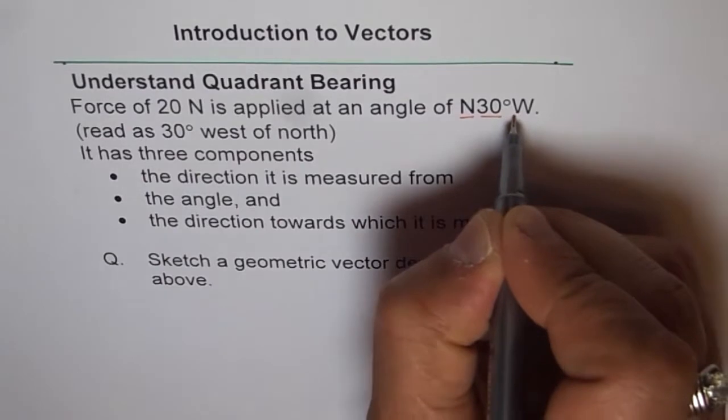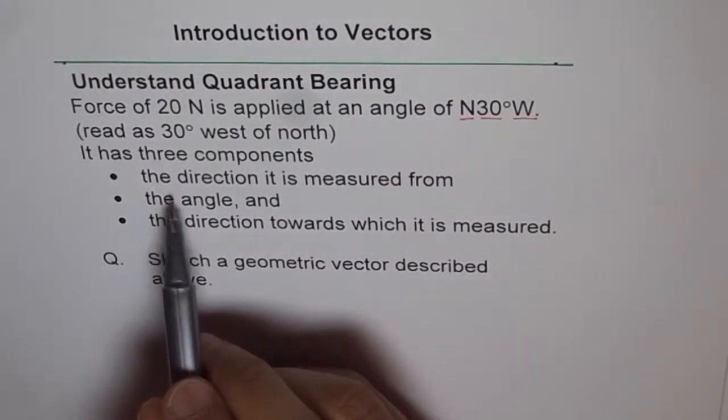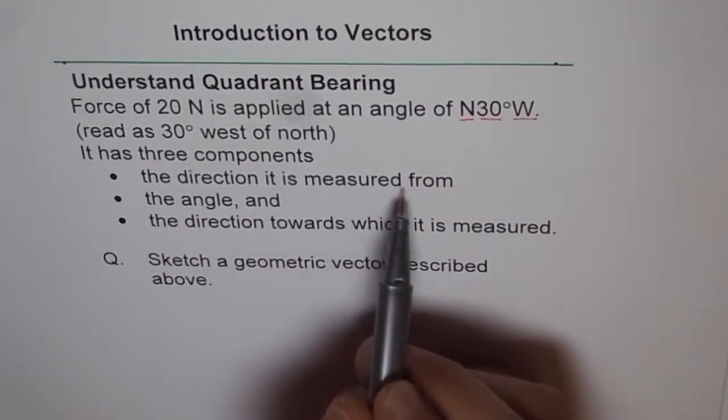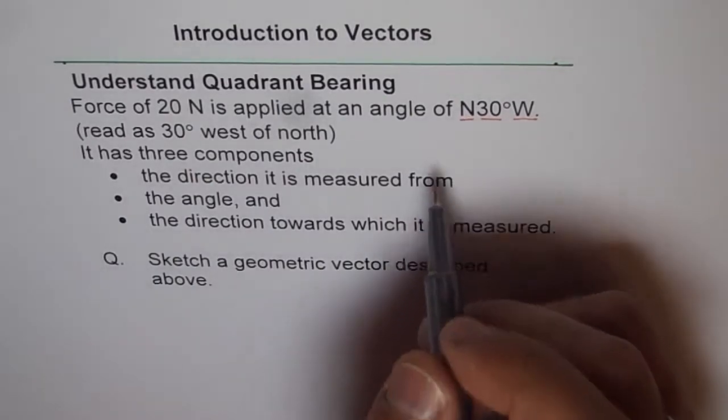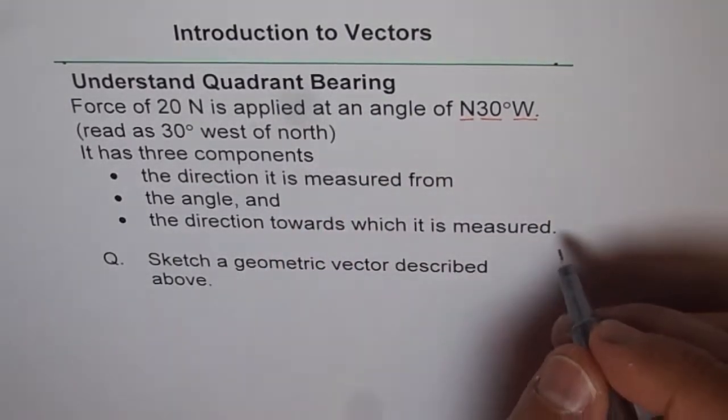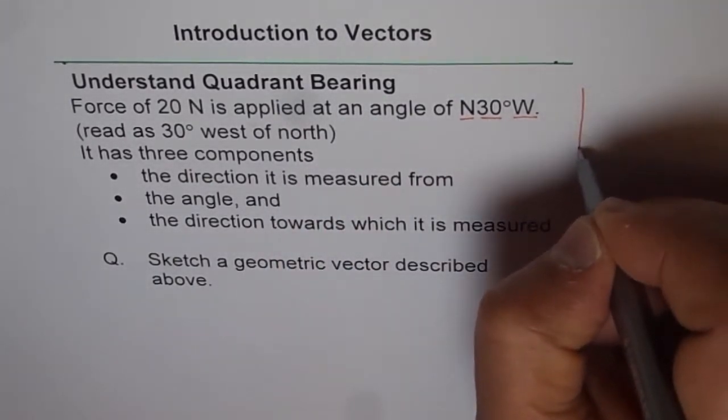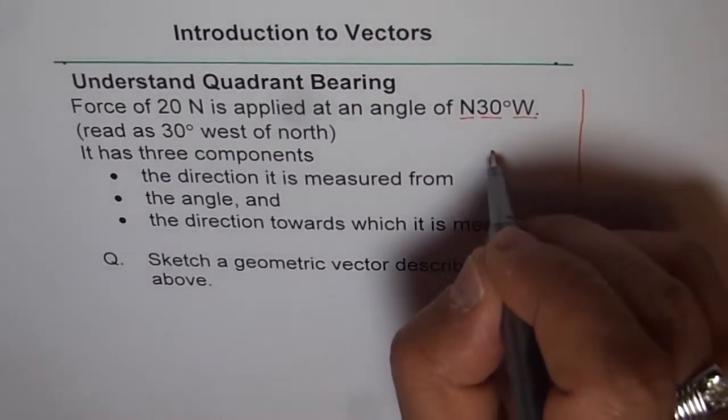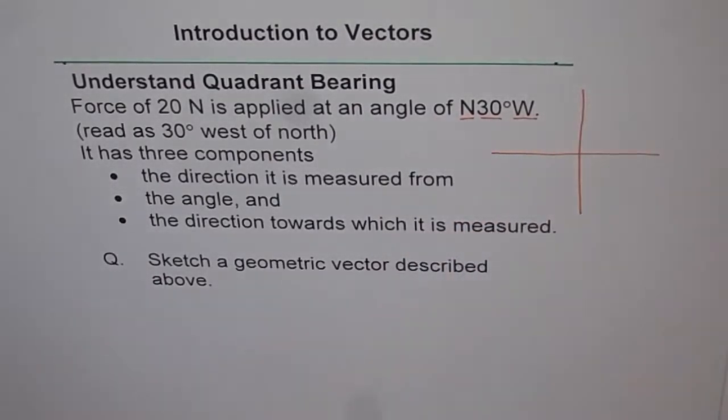One, two and three. The direction it is measured from is the first component. So quadrant bearing, normally we are measuring direction from north or south. It is basically from north-south line.